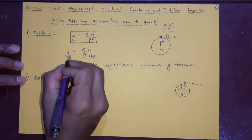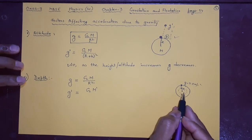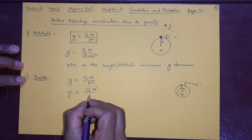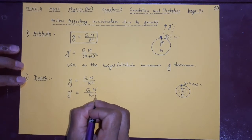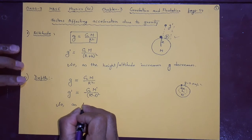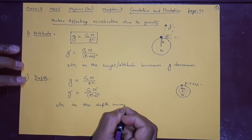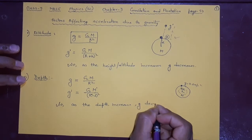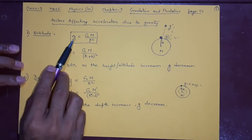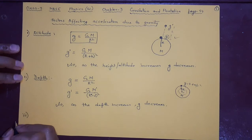So g' = GM'/r'². The mass m will decrease because only the mass up to that depth is considered. The radius also becomes r minus d, but the change in mass is very significant. So as the depth increases, g decreases. Both going away from the earth and going inside the earth cause g to decrease.